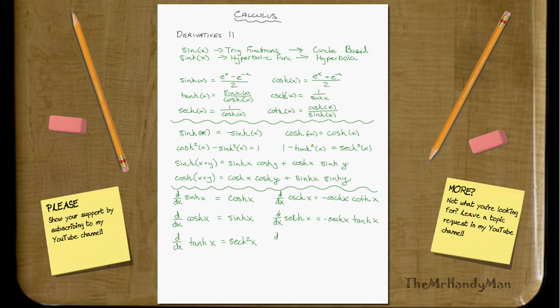And then we can finish up with the last one. coth x, which will equal just a simple negative csch squared x.